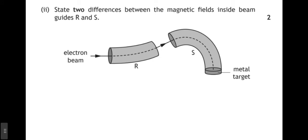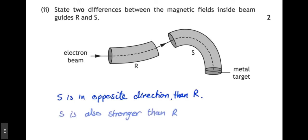Part two. State two differences between the magnetic field inside beam guides R and S. So, as we look at R and S, we can see two things happen. One, the two are directing the beam in opposite directions. So, S must have a magnetic field which is in the opposite direction to R. Also, we can see that R only bends the beam slightly, whereas S bends the beam through a full 90 degree angle. So, the magnetic field at S must also be stronger than R.